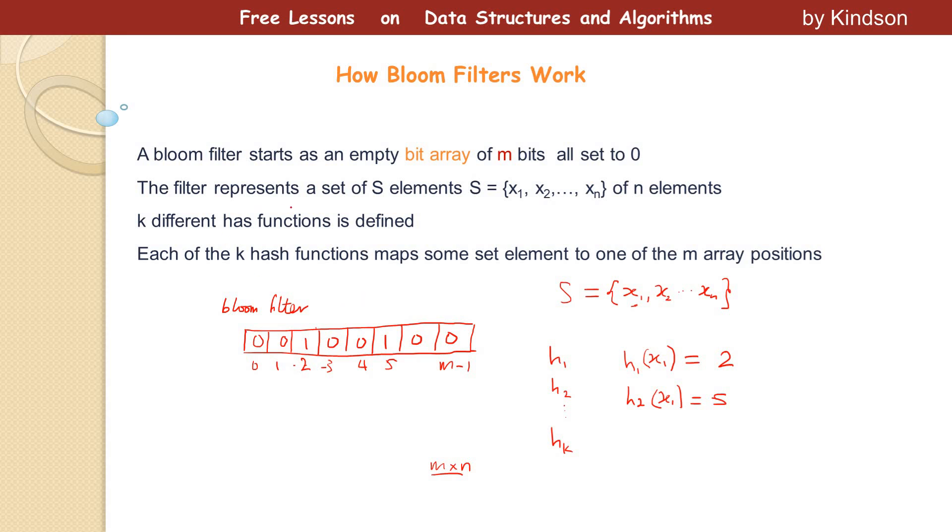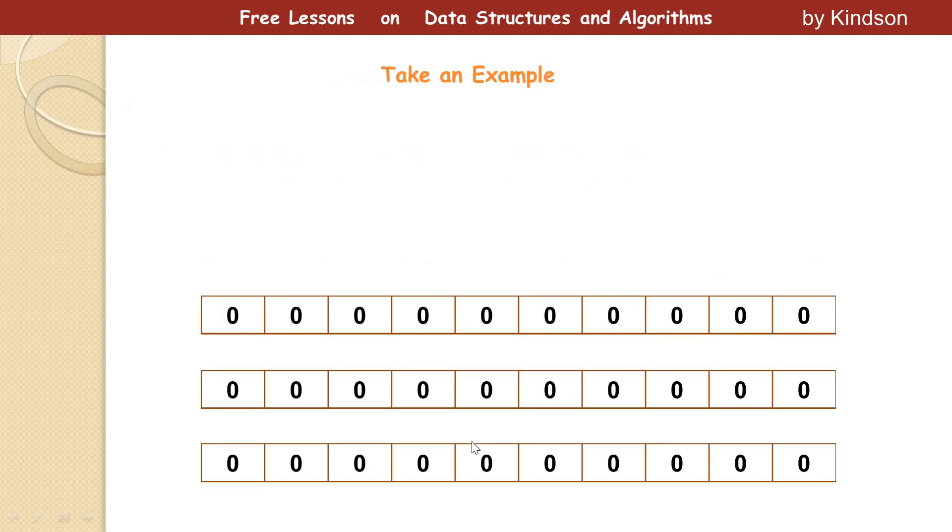But we still continue. I just want to make sure you understand the principle. Alright. So just a recap. We have M bits here. We have K hash functions. And we have a set of elements X1 to Sn. And this, we say, is the number of bits is given by M times N. So to get this a little clearer, let's now take a typical example, a very much typical example. I want you to follow along as we do this together.